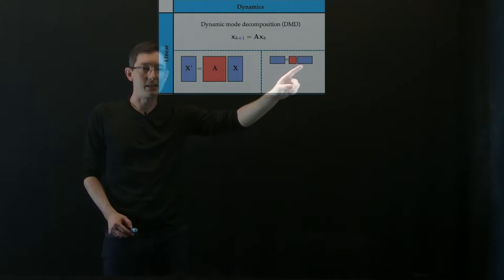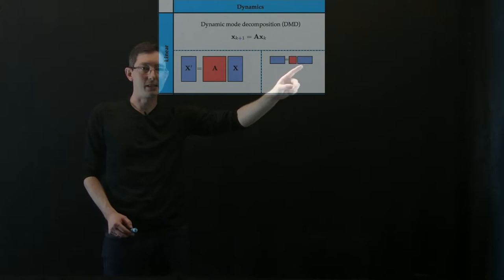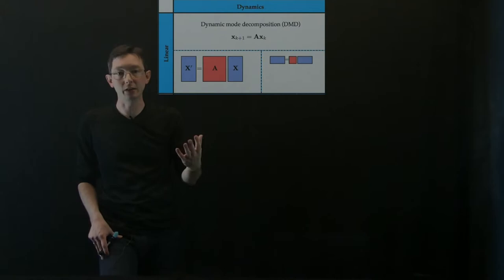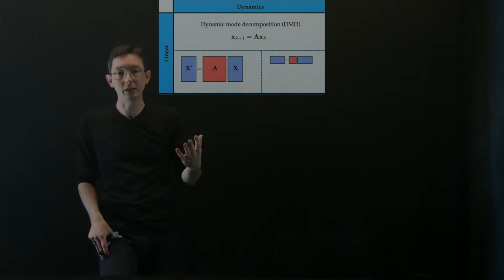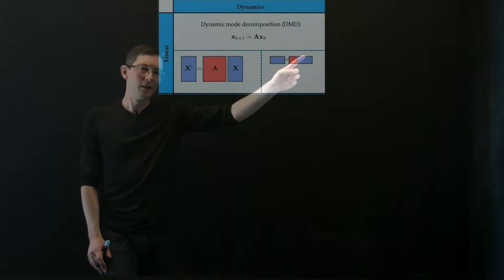And what I'm showing over here is this idea that if I have really high dimensional measurements, the first thing I might do is some dimensionality reduction on these measurements X, something like a singular value decomposition, and then I might do my little regression on these reduced dimensionality representations over here.